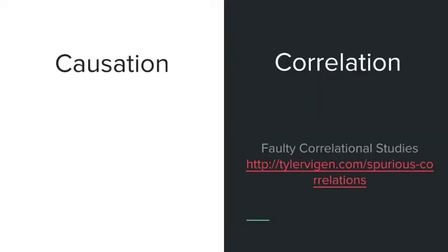But first I'd like to talk about correlation versus causation. These are two ways that two variables might be related to each other, but they have some key differences. Correlation means that the changes between two variables change together, whereas causation means a change in one variable actually causes the change in the other.